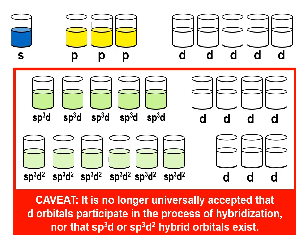Now, I want to point this out. Caveat. Warning. It is no longer universally accepted that D orbitals participate in the process of hybridization, nor that SP3D or SP3D2 hybrid orbitals exist. So, I'm only including them here because there is a pattern.